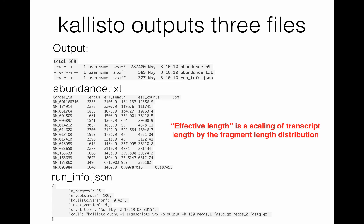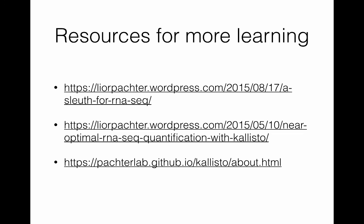The output of Kallisto, after it has aligned and quantified the reads, consists of three files: abundance.txt, abundance.h5, and a run_info JSON file. Abundance.txt and h5 contain the same information, but the h5 is a large-scale storage format called HDF5, which we don't need to worry about for the purposes of this tutorial. The abundance.txt is the information that Sleuth will use to evaluate differential expression. It contains the target ID (that's the transcript ID), the length, the effective length, estimated counts, and transcripts per million in a tab-separated format.